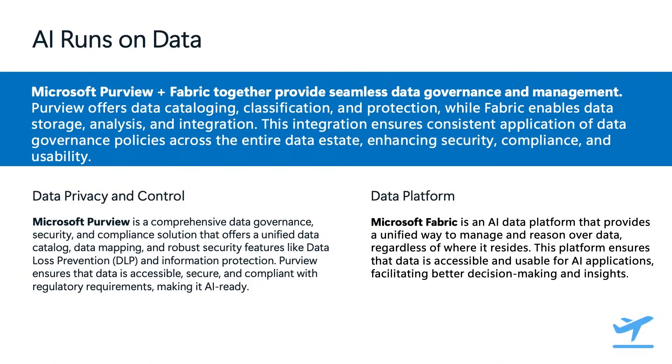This is where things like sensitivity labels and properly configuring data governance with tools like Microsoft Purview is extremely important. You want to ensure only employees within your organization who should have access to certain data have access. It becomes even more important as you start leveraging these different AI toolings that enable users faster access to different files. Microsoft Fabric is a great way that you can actually organize all of this data into a single location and make it very accessible and usable. These are two of Microsoft's tools to enable seamless data governance and management.